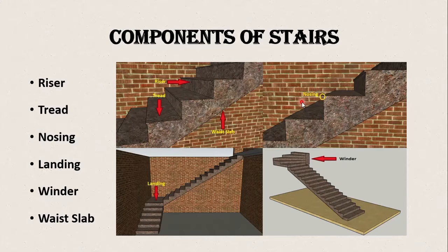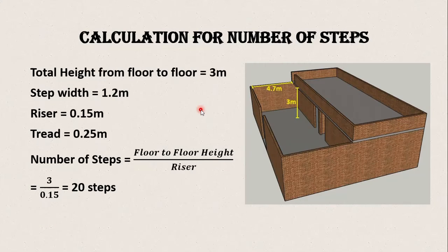is the nosing. This part is known as the landing, and this band is the winder. These are the few components - before construction you should have knowledge of these at least. So let's start with the calculation